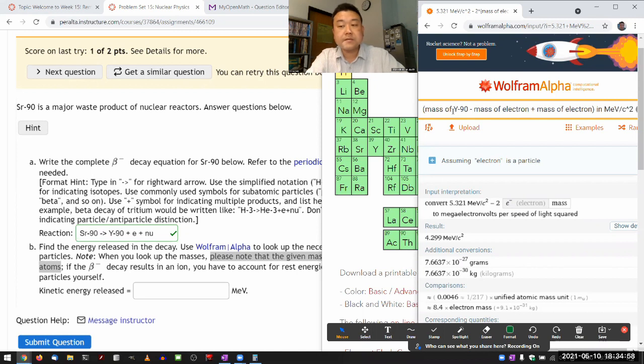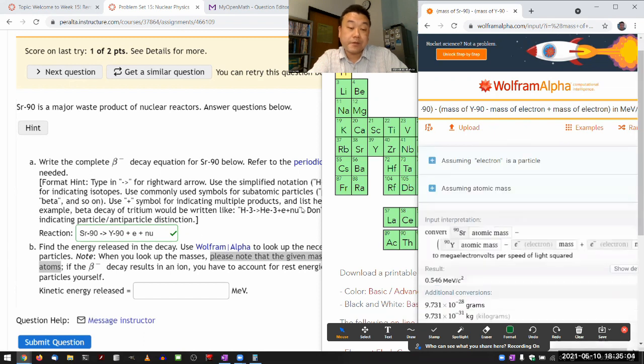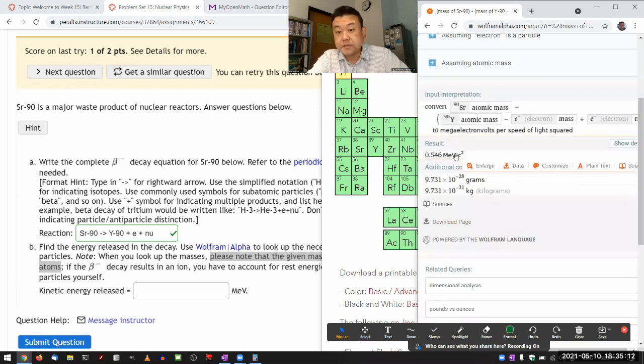So this calculation in MeV per C squared. I'm calculating mass. So the correct unit would be MeV per C squared. And for the kinetic energy released, I can just ignore the C squared. So, yeah. And you can see how small this is,